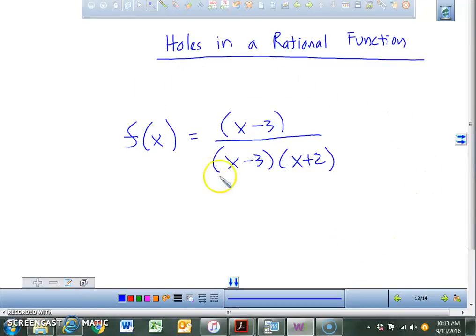Alright, so we're going to be talking about holes in a rational function. What do you guys notice about this particular function that the numerator and the denominator both have in common? Which means, if you have numbers that are exactly the same in the numerator and denominator, what can you do, right? Cancel them out.